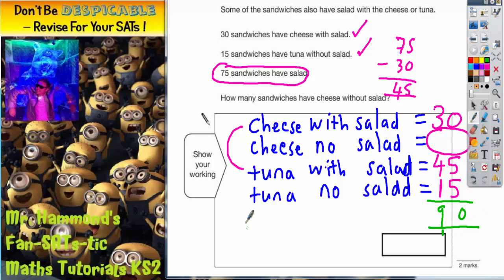So 30 plus 45 plus 15 makes 90 sandwiches. Now if there are only 100 sandwiches in total, and we've already had 90 sandwiches, there must be 10 more. And these 10 more must be the mystery cheese with no salad.